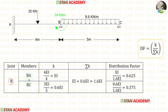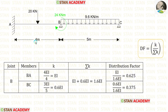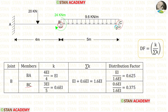At joint B, let us find the stiffness for BA. From point B we look at point A, which has a fixed support, so the formula is 4EI upon L. With the length of BA equal to 4, we get a stiffness of EI for BA. Now for BC, from point B we look at point C, which has a hinged support, so the formula is 3EI upon L. With the length of BC equal to 5, the stiffness of BC is 0.6EI.